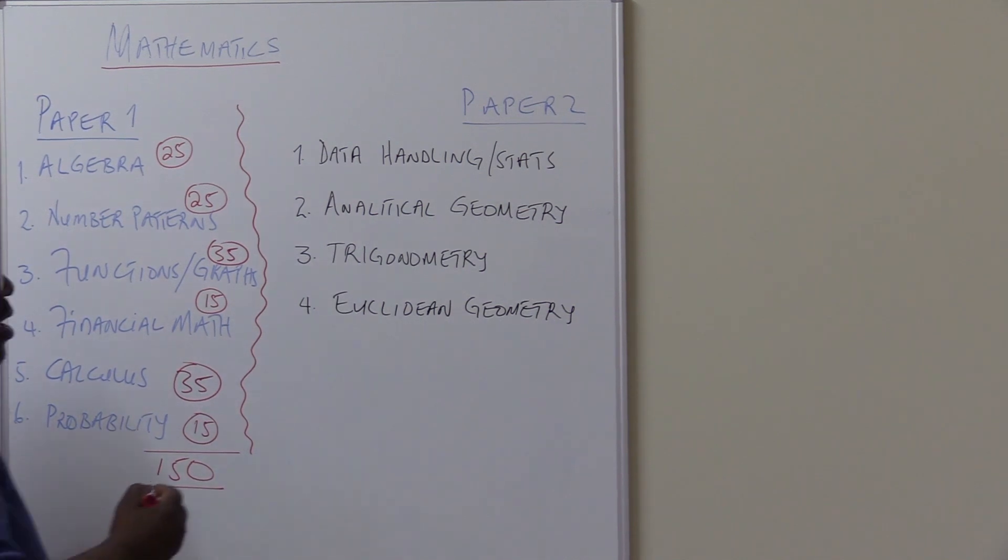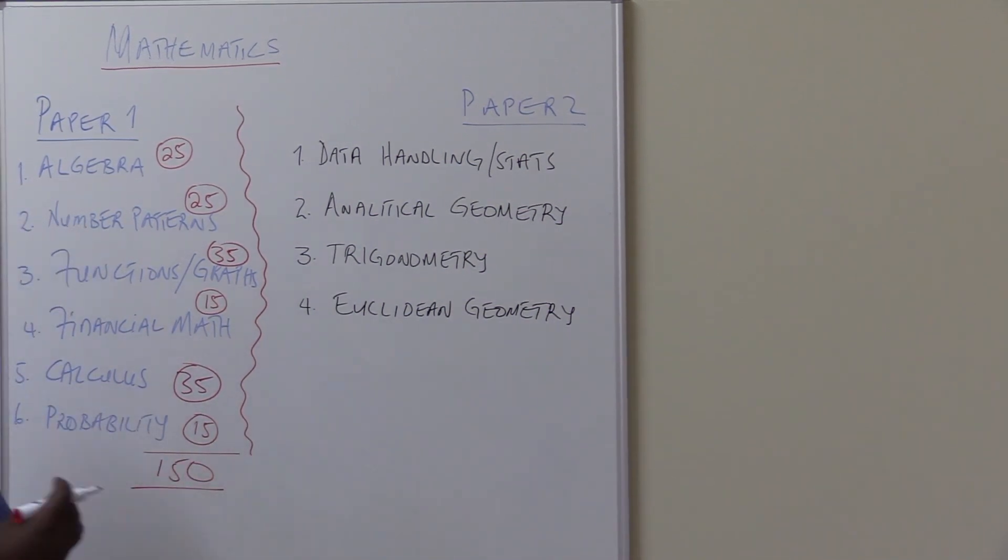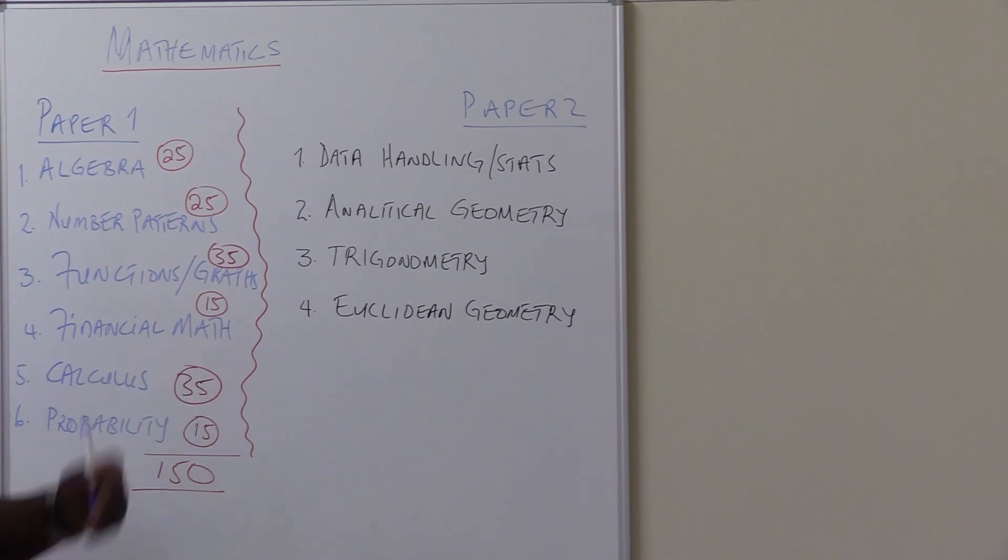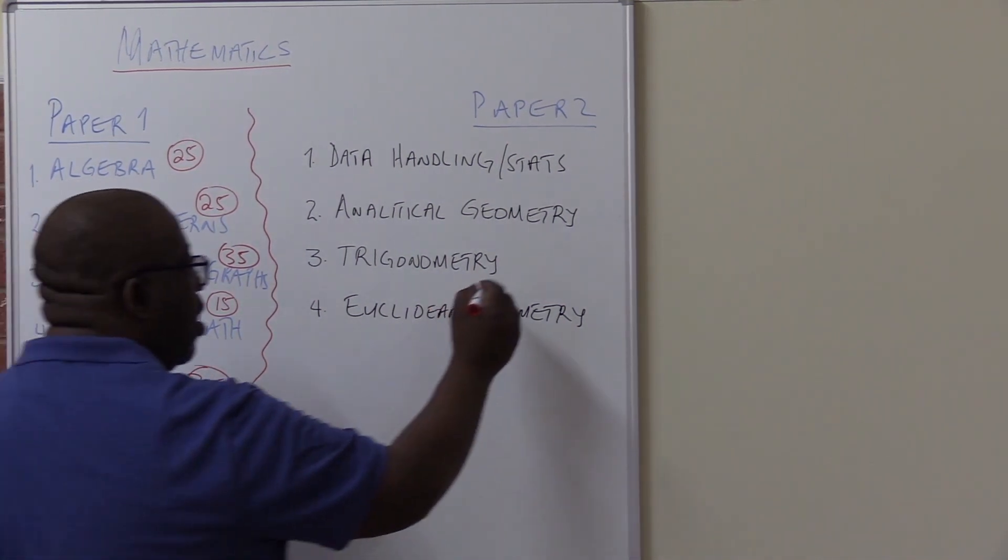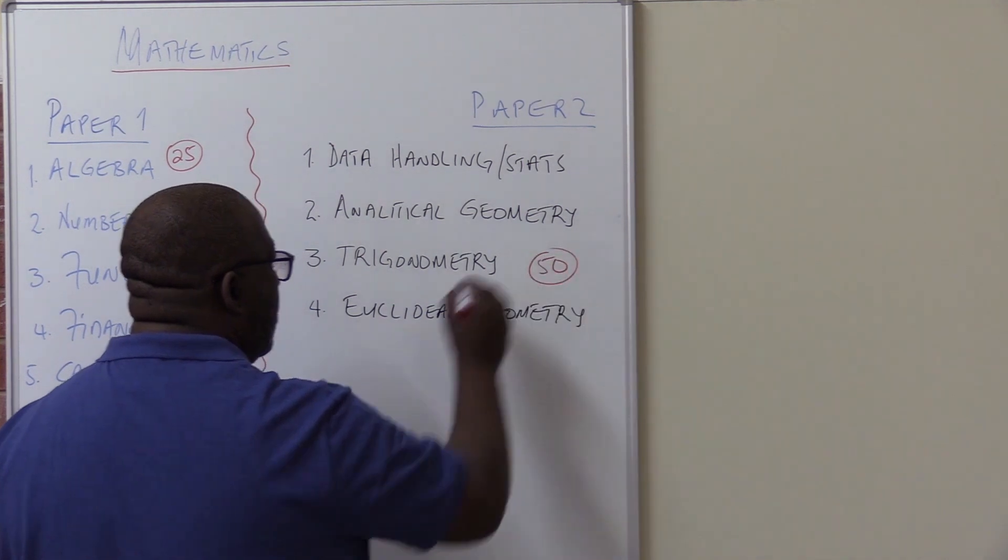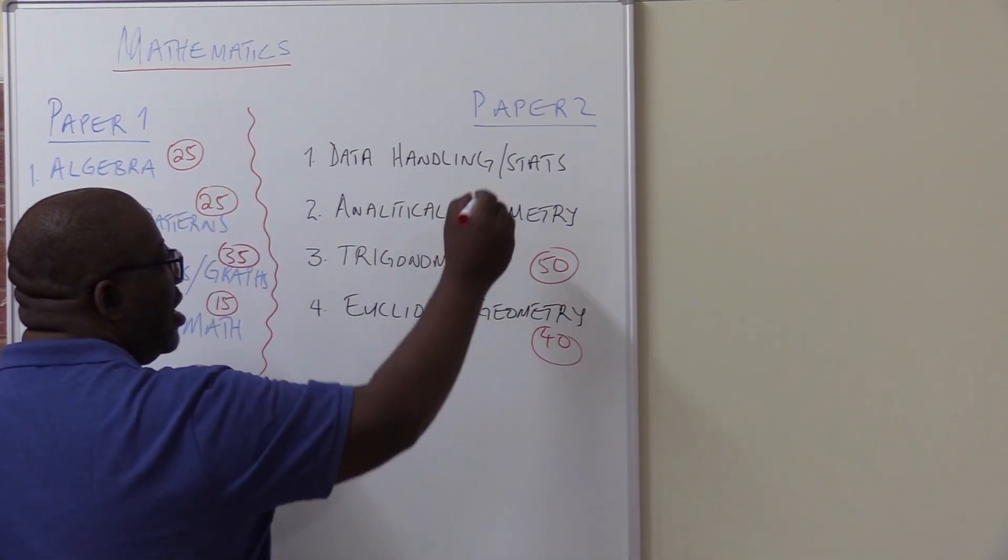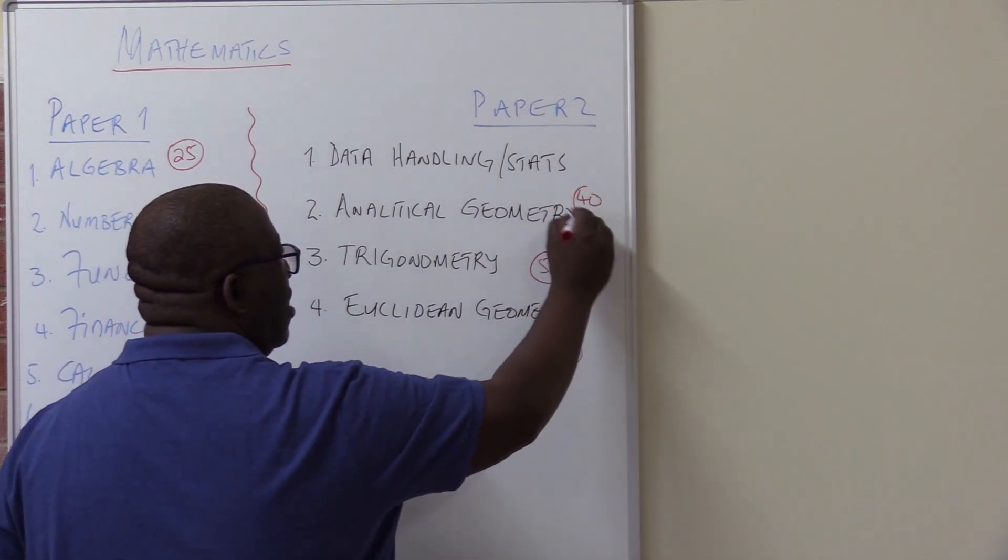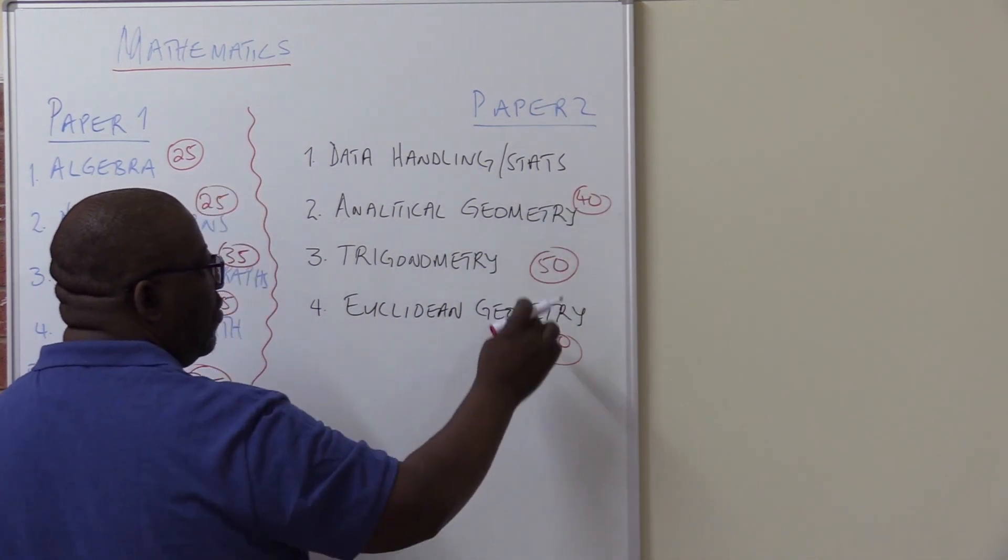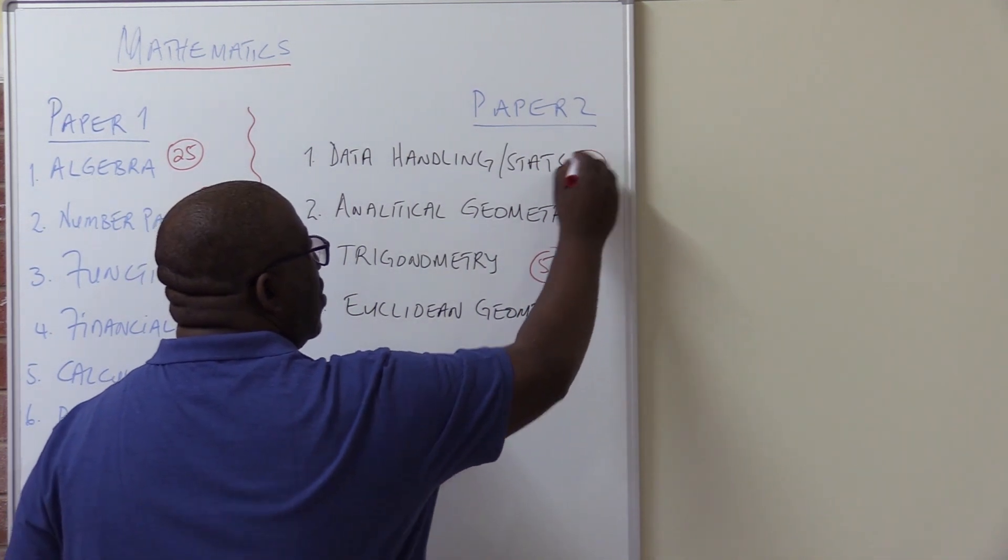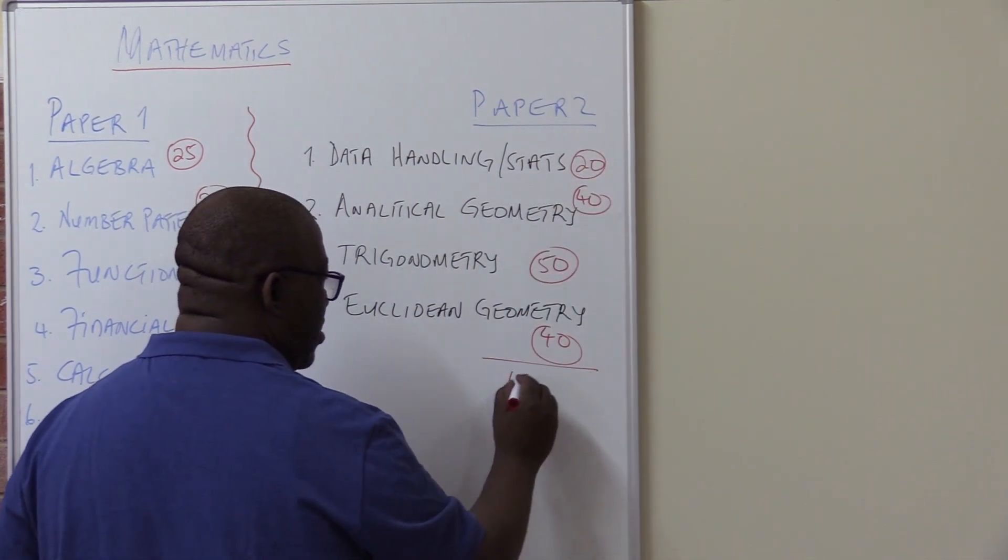Your paper 2, the bigger section, this has changed. It used to be Euclidean geometry which carries more weight. Now it is trigonometry. Trigonometry will be about 50 marks. Euclidean geometry will go down to 40 marks. Analytical geometry also 40 marks. This is 50, 40, 40. You're short of 20. This will be 20 marks. Altogether, it will be 150 marks.